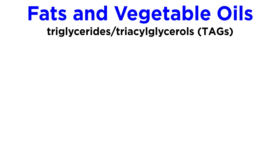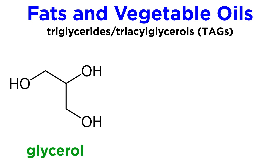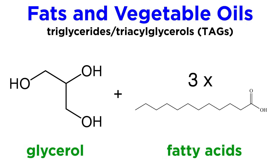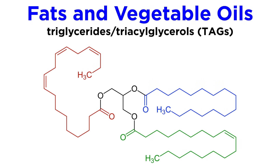Now let's move on to fats and vegetable oils. These are the most widely occurring lipids. Structurally speaking, they are triglycerides, or triacylglycerols, abbreviated as TAGs. This means that they are derivatives of glycerol, which is a three-carbon triol where each hydroxyl has performed esterification on a long-chain carboxylic acid called a fatty acid. So we end up with something like this, with three ester groups in one molecule, one for each of the hydroxyls in glycerol.